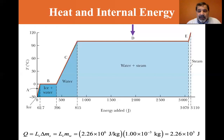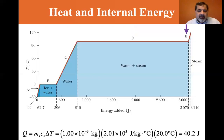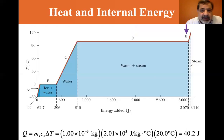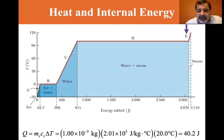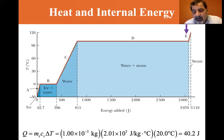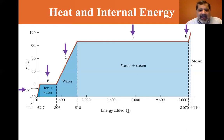The last part raises the steam from 100°C to 120°C — again a specific heat problem. Q = m_steam · c_steam · ΔT, with ΔT = 20°C: (1 × 10⁻³ kg)(2.01 × 10³ J/(kg·°C))(20°C) = 40.2 joules to raise the steam to 120°C.